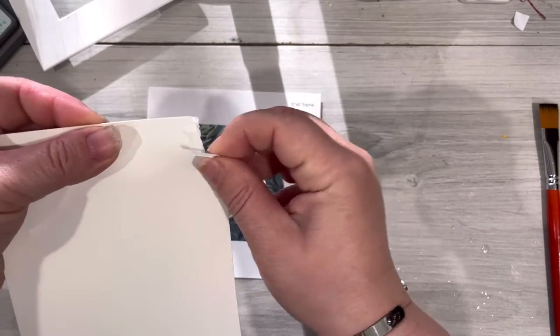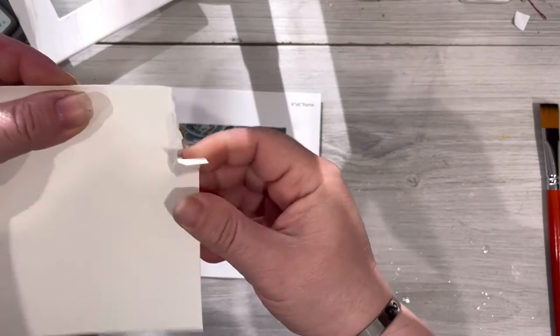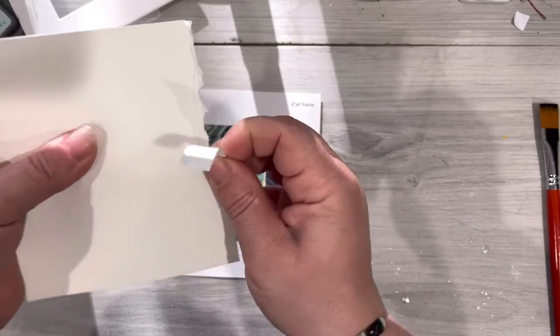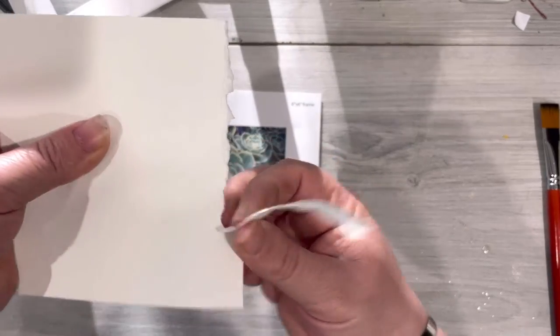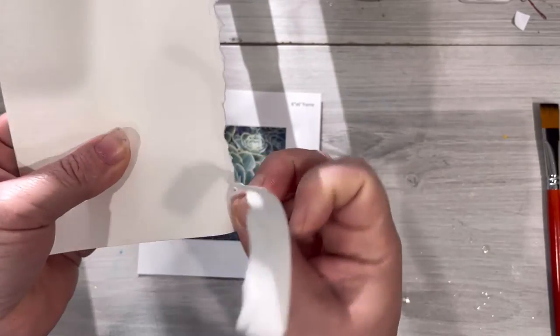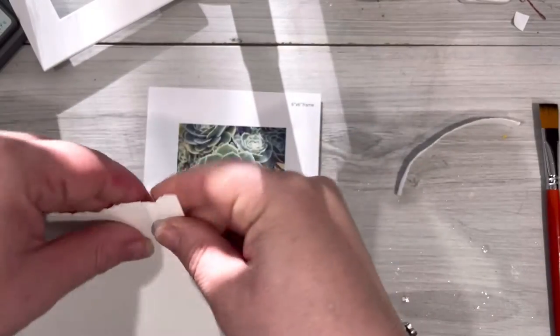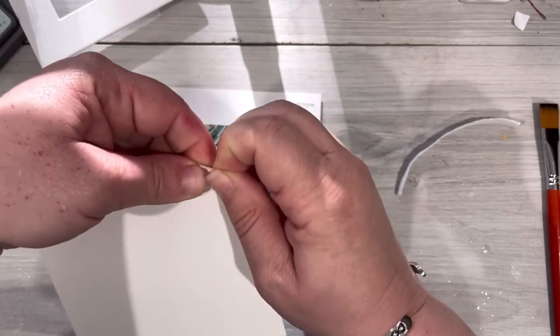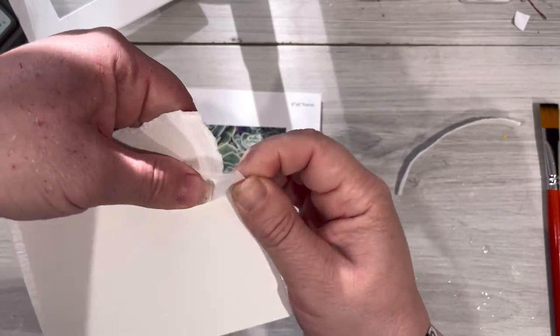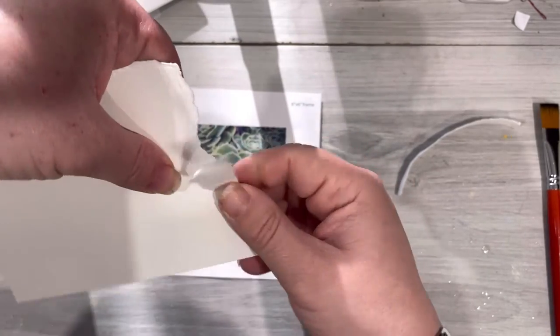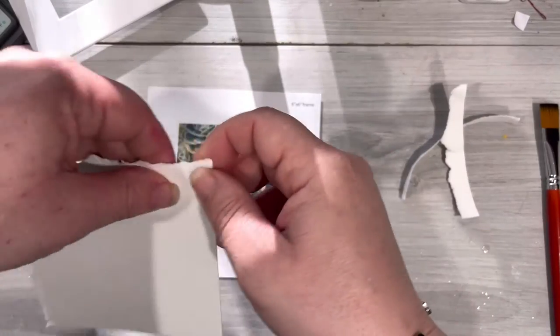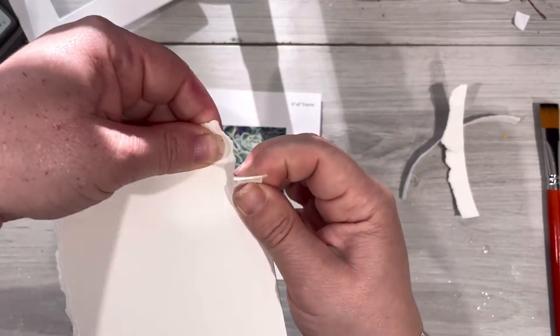The first step is to tear this. Now here is a tip. Always tear towards you. When you tear towards you you get this really really pretty edge that gives you that really nice torn look. If you were to do it in the other direction the torn area would actually be sitting on the back of your piece and it wouldn't look as interesting or have as much texture.